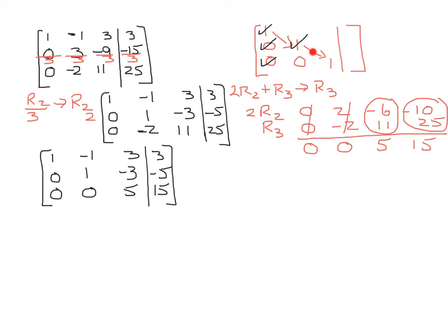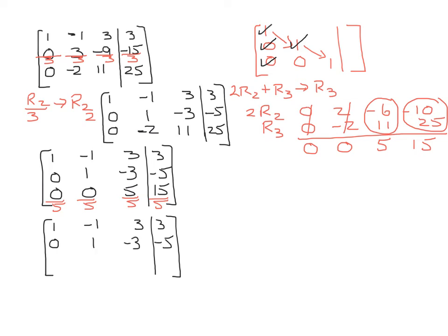We now have zeros in the right places. The last thing we need to do is go down the diagonal and get a 1 in the bottom-right position. We divide every element of row 3 by 5. So the final matrix has: row 1 — 1, negative 1, 3, and 3; row 2 — 0, 1, negative 3, negative 5; row 3 — 0 divided by 5 is 0; 0 divided by 5 is 0; 5 divided by 5 is 1; and 15 divided by 5 is 3. So now we have our matrix in row echelon form, with 1's on the diagonals and 0's below.